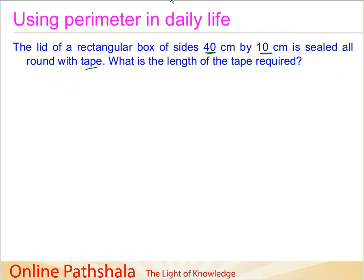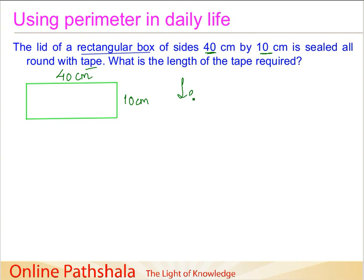A little visualization will be helpful to solve this problem. We have a rectangular box, so let's draw its dimensions. I am going to draw the longer sides and then the shorter side. Here we have a rectangle — the longer side is 40 cm and the shorter side is 10 cm. We are supposed to find out the length of tape for all sides. To tape it, we have to go all along the boundary.